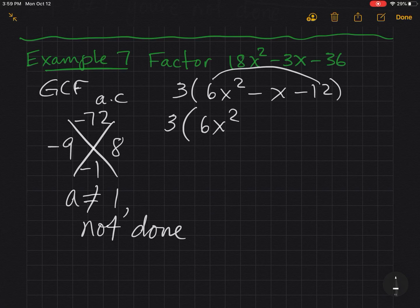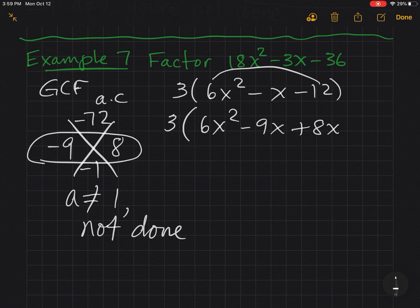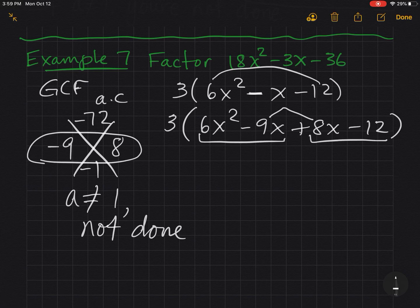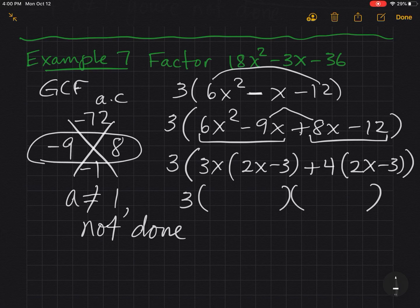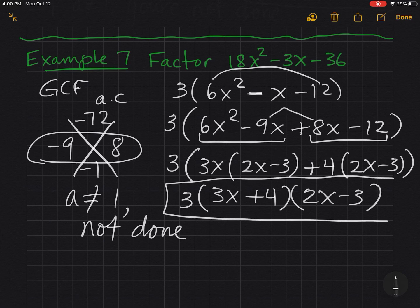So what I'm going to do, I'm going to bring that 3 down. 6x squared. I'm going to split. I get a negative 9x plus 8x. And bring the minus 12 down. And notice that this negative 9x and positive 8x equal up to a negative 1x. So now I'm going to factor by grouping. And I'm almost done. So 3x comes out. I'm left with 2x minus 3. And a positive 4 comes out. And I'm left with 2x minus 3. Bring the 3 down. Set up my parentheses. I got a 3x plus 4 here. And a 2x minus 3 here.